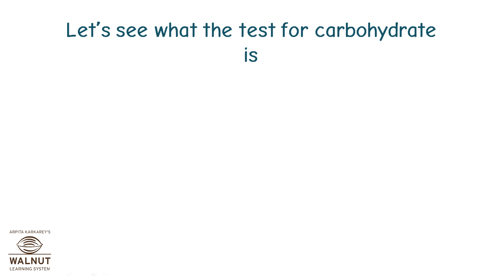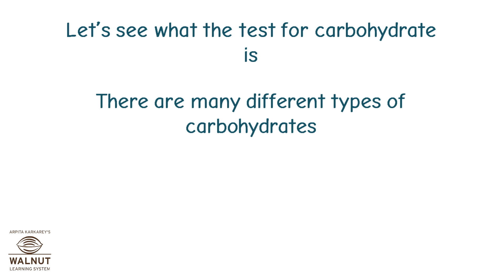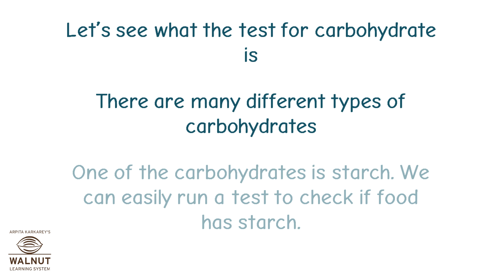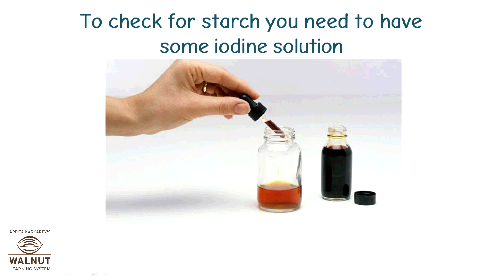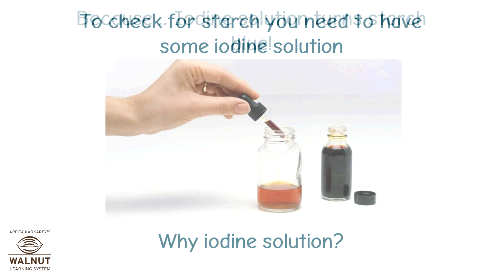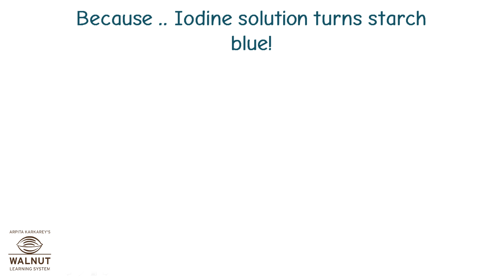Let's see what the test for carbohydrate is. There are many different types of carbohydrates. One of the carbohydrates is starch. We can easily run a test to check if food has starch. To check for starch, you need to have some iodine solution. Why iodine solution? Because iodine solution turns starch blue.